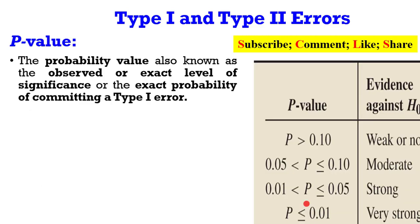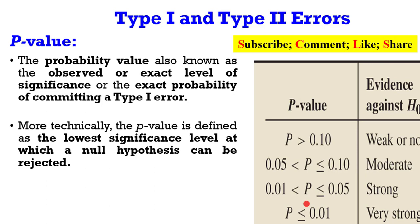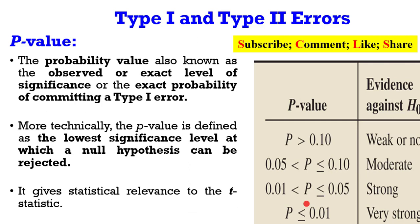Let's take a look at the p-value. The p-value is also known as the observed or exact level of significance, or the exact probability of committing a type 1 error. More technically, the p-value is defined as the lowest significance level at which you can reject a null hypothesis. It is also the p-value that gives statistical relevance to the T-statistic. Looking at this table, you can see the point at which the p-value will give strong or weak evidence against the null hypothesis.